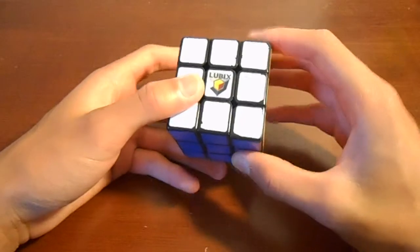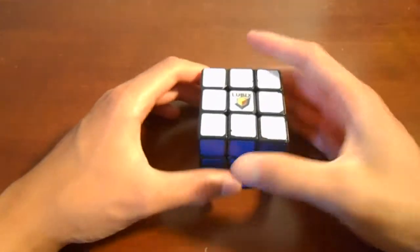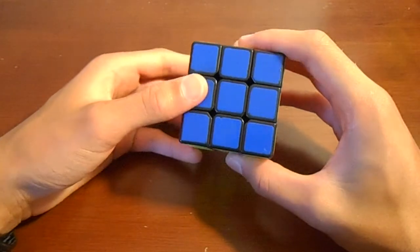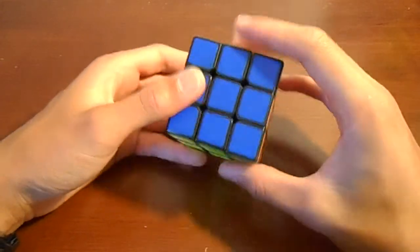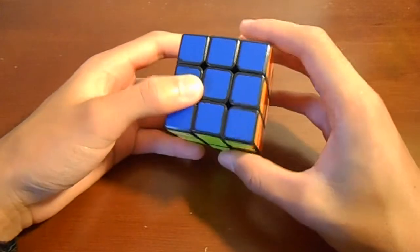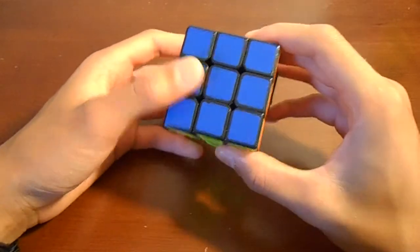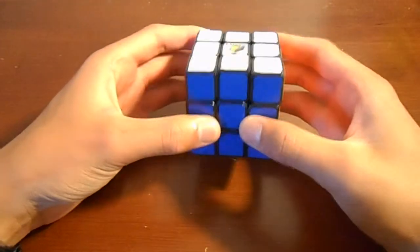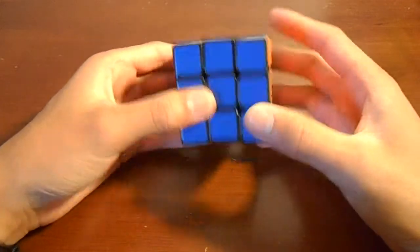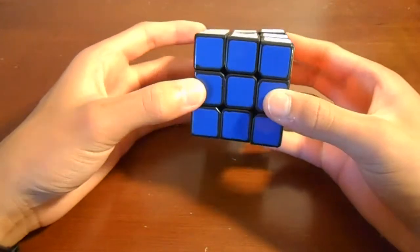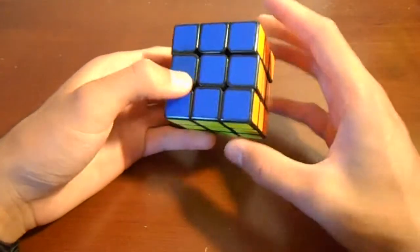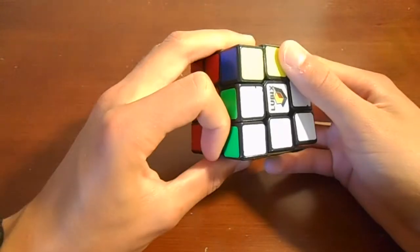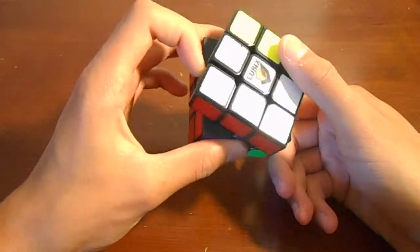If you watch people on YouTube or in real life do solves and scramble using hand scrambles, you'll notice that they do very similar moves. Some people will do a lot of M slices or R moves. I personally do a kind of weird thing where I do U and D at the same time and a lot of R2s and then U or R2 and then U and D.